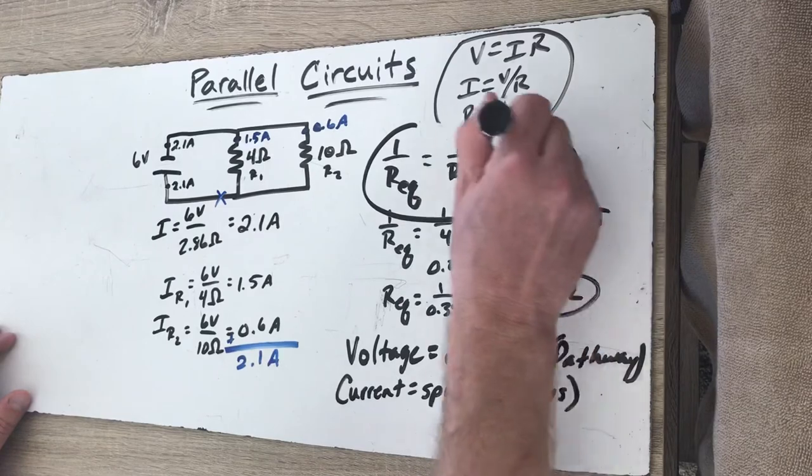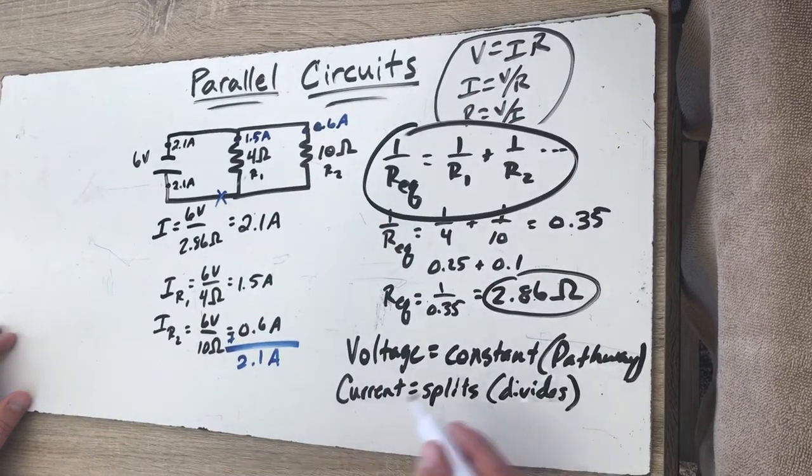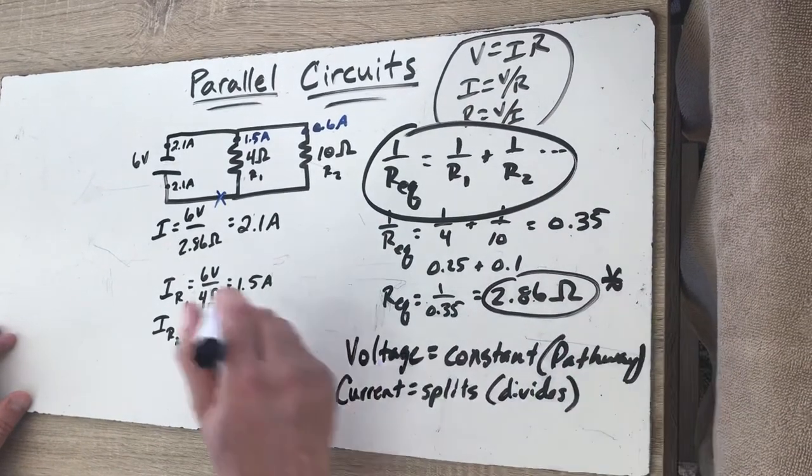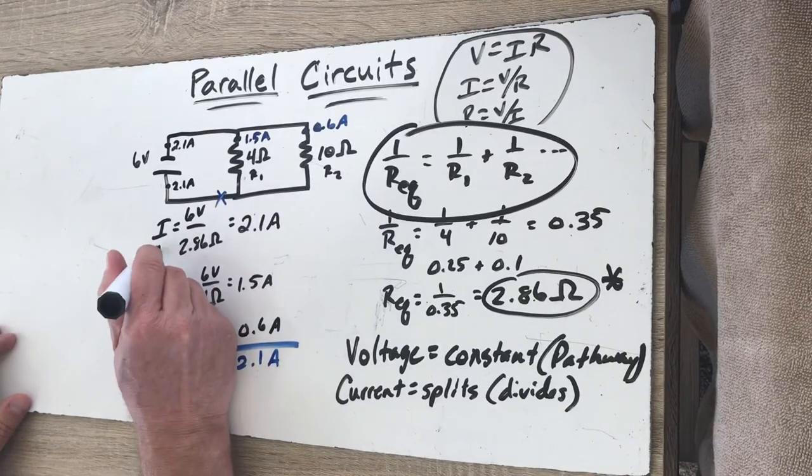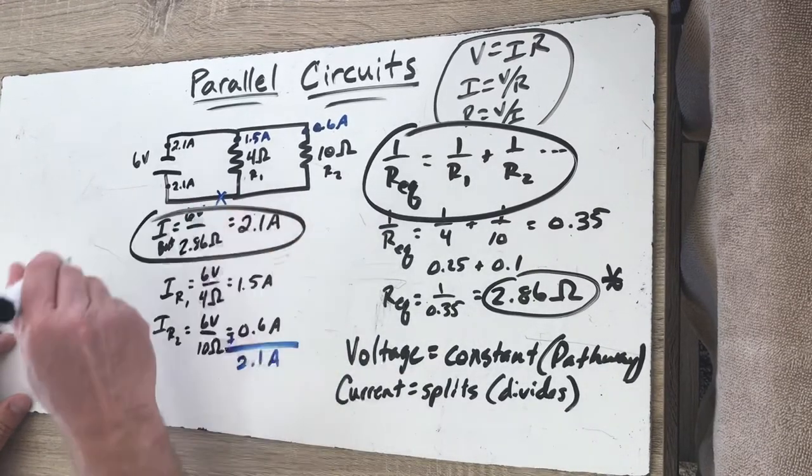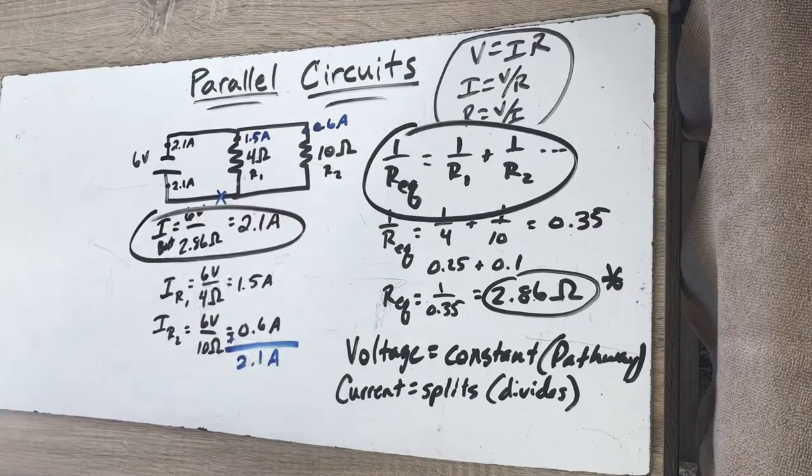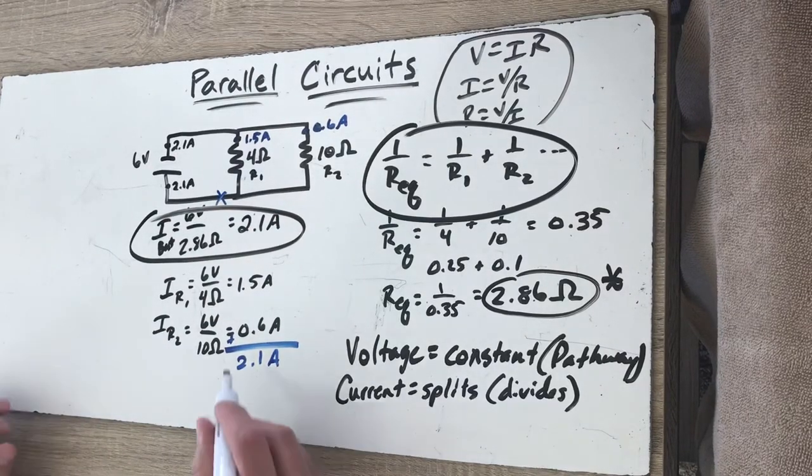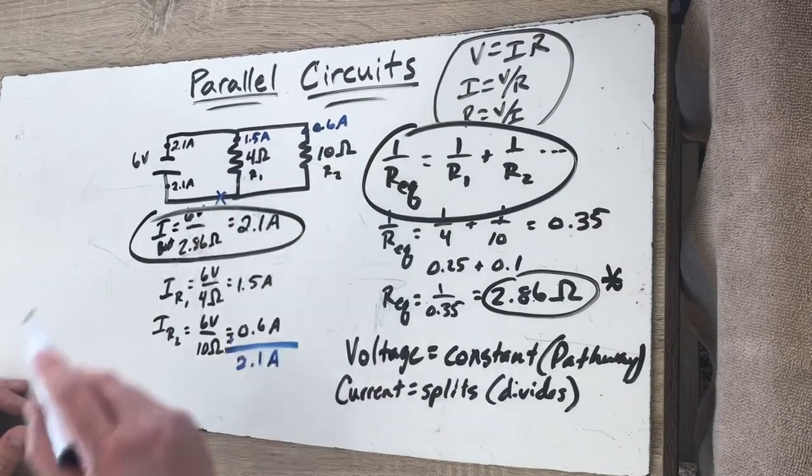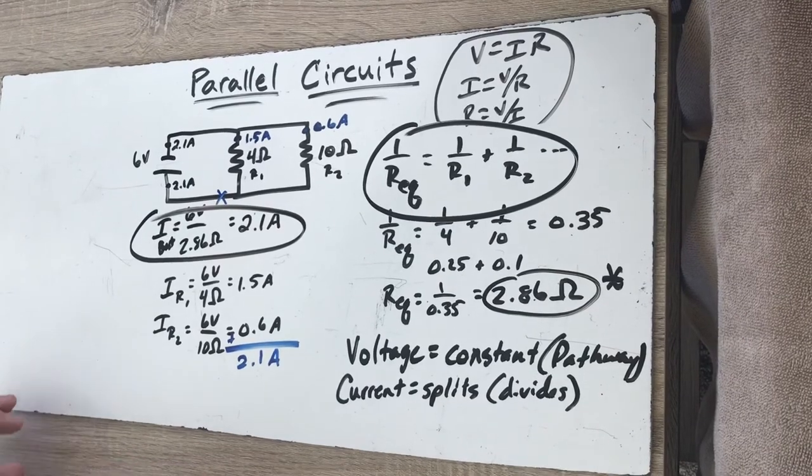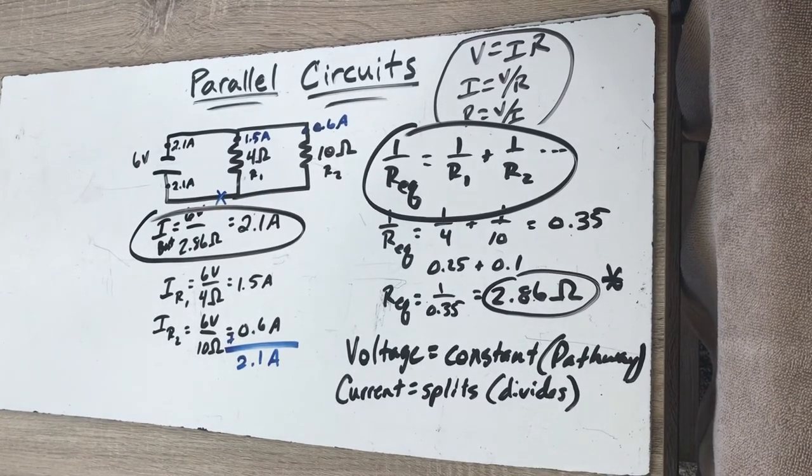This is how we would analyze a parallel circuit. You start by getting the equivalent resistance, then you take that equivalent resistance and you figure out the current coming from the battery. So you know what the battery essentially is experiencing, and then we divide it up and try and figure out what's happening in each pathway. And that's the basic premise for analyzing parallel circuits.